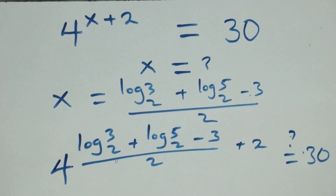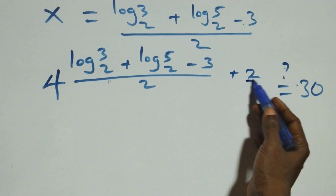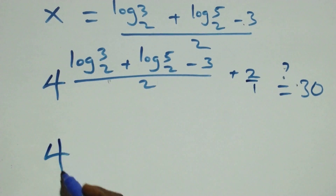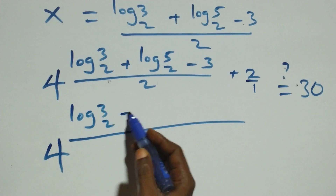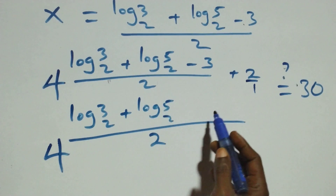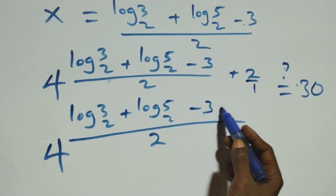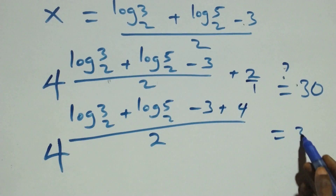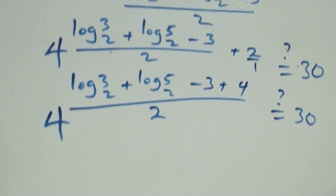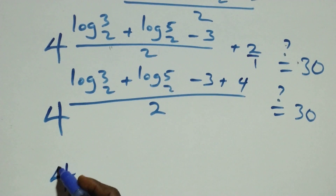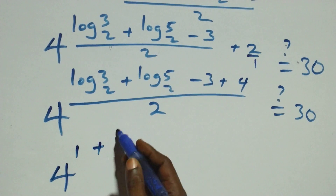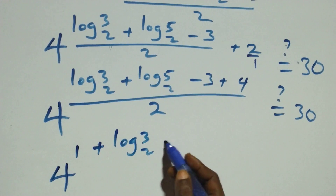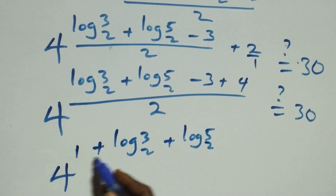We bring the terms together. We have 2 over 1 times the quantity log₂3 plus log₂5 minus 3, and then plus 4. Is it equals to 30? Next step: we have log₂3 plus log₂5, all over 2. Is it equals to 30?